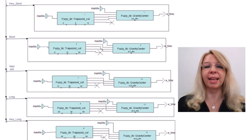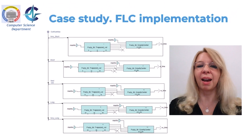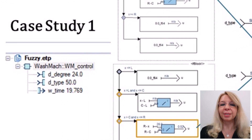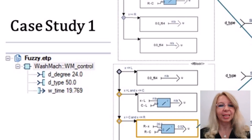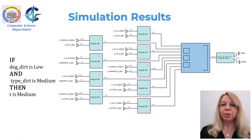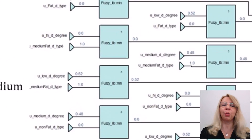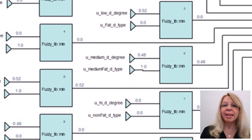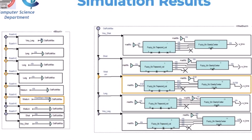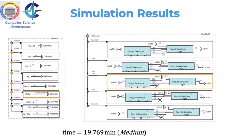Selecting from the five output fuzzy sets, x_cg provides the washing time. In the first case study, with degree of dirtiness 24 and type of dirtiness 50, the membership functions for dtype and ddegree are calculated. Rules are evaluated using the minimum function, and the max value selects the output fuzzy set. The output gives a washing time of 19.769 minutes, calculated using the center of gravity of the obtained trapezoid.